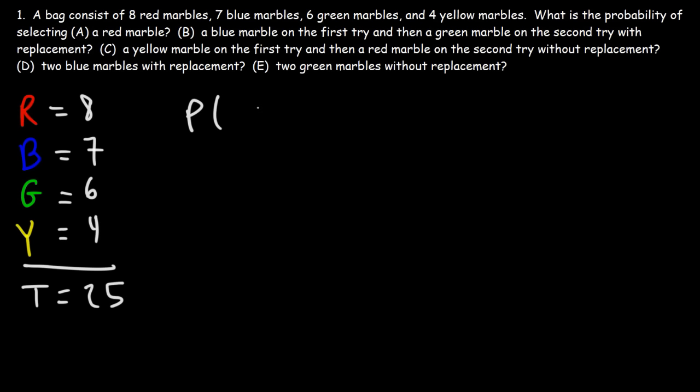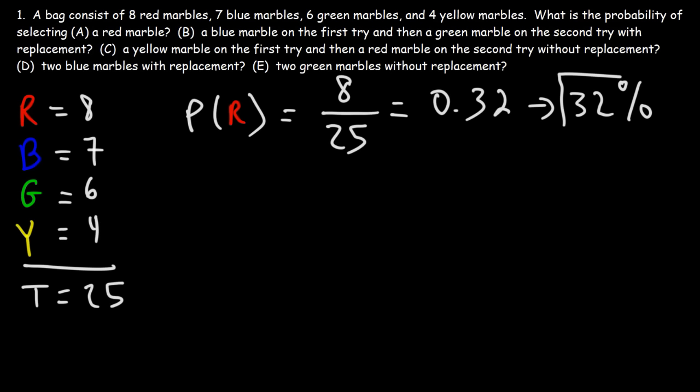So what's the probability of selecting a red marble? To calculate the probability of an event occurring, it's the number of favorable outcomes divided by the total possible outcomes. In this case, it's the eight red marbles divided by the total number of marbles, which is 25. Eight divided by 25 is 0.32, so there's a 32% chance of selecting a red marble on the first try.